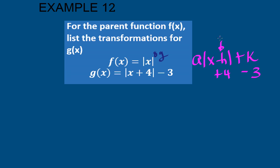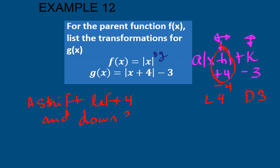So h, the inside number, means left or right, and k means up or down. These are opposites, so that's actually negative 4, so that's left 4 in the x direction. And then this is negative 3, so that is down 3 in the y direction. So those are our transformations: a shift left 4 and down 3.